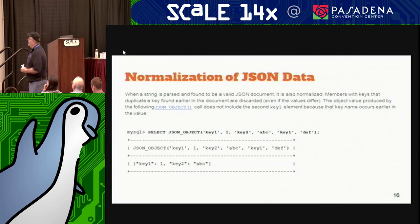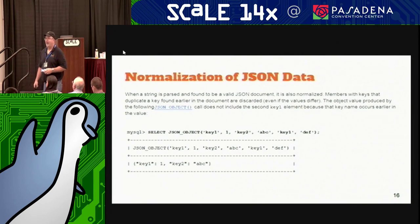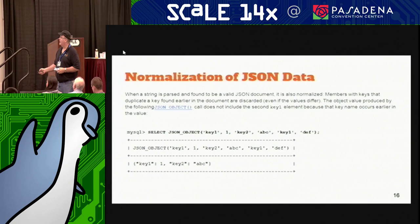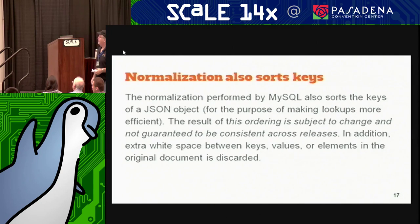When you put a JSON document into MySQL and you're reusing keys — remember it's a key-value pair — if you repeat the key, you're going to lose the second through last one; it takes the first one. So if you have key1 value1, key2 valueABC, key1 def — two key1s — the server gives you key1 of value1 and key2 ABC. The second key1 goes off into the bit bucket. This is part of the behind-the-scenes optimization, and it will also internally sort those for the purpose of making lookup easier.